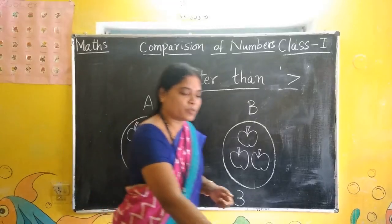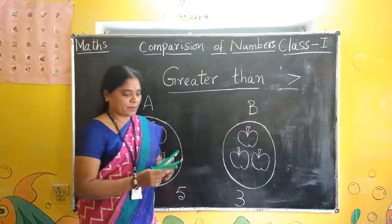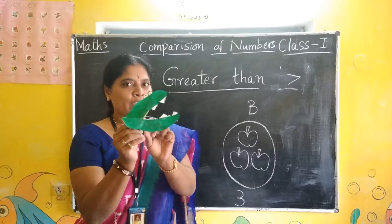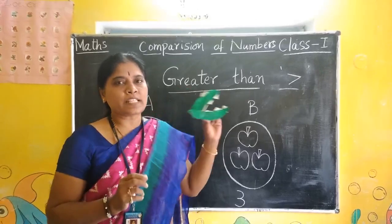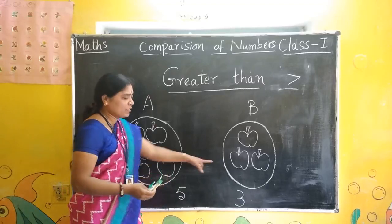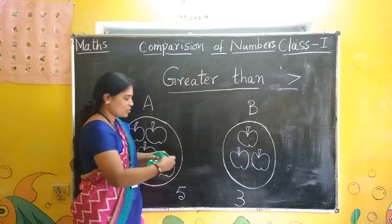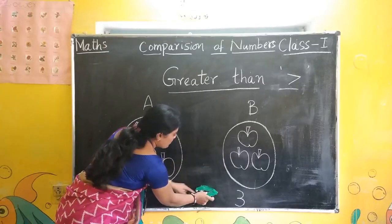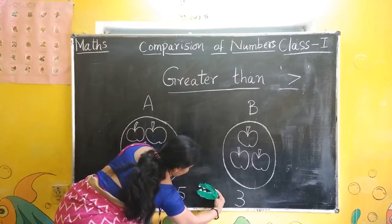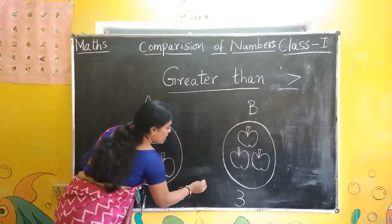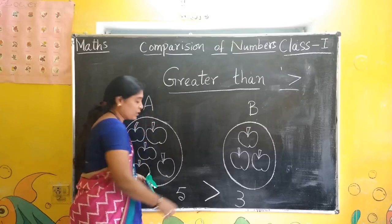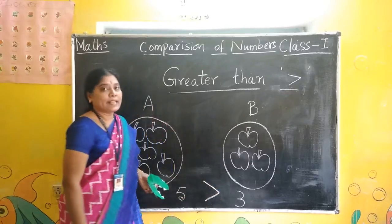Now what is the symbol we have to use to show which one is greater? This is the alligator. Look here — it is opening its mouth and looking at us. Now we have to place this alligator there. Look at the more. Now 5 apples are more than 3. So alligator likes more, so it is opening its mouth towards more apples. Now it is opening its mouth like this to eat all these apples. So which symbol we have to write? This symbol — the mouth opening is showing towards the bigger number. So this symbol we have to call it as greater than.